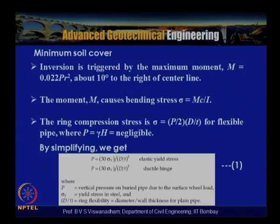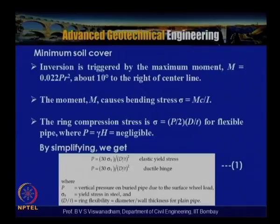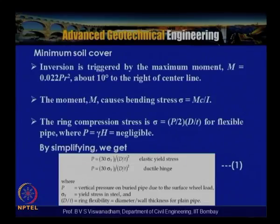The parameter D/t is the ring flexibility, defined as the ratio of diameter to wall thickness for plain pipes. For example, a 3.8-meter pipe with about 20 mm wall thickness gives D/t ≈ 190, indicating a very flexible pipe. For cooling water pipelines, the ring flexibility D/t is typically on the order of 180 to 200.